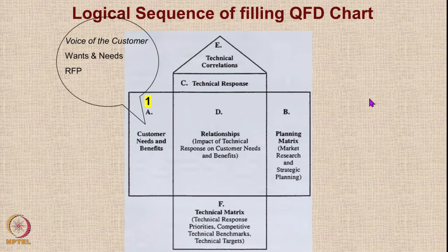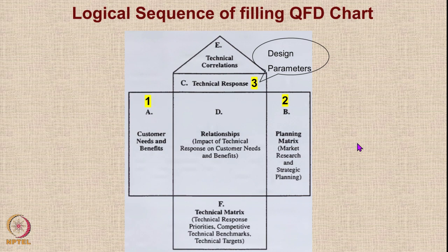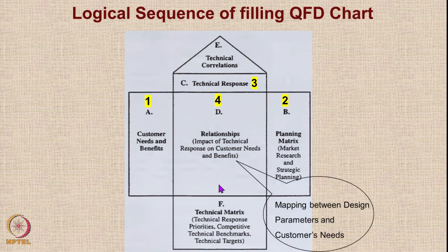The logical sequence is straightforward: first identify the voice of the customer — wants and needs from the RFP, the request for proposal. Then look at the planning matrix using market data and strategic goals to rank-order the needs. Next, decide which design features to investigate. Then map design parameters to customer needs. For the interrelationships between design parameters — both positive and negative — note that in the central matrix you normally ignore negative correlations and focus only on positive ones, because your aim is to decide which feature ranks higher.